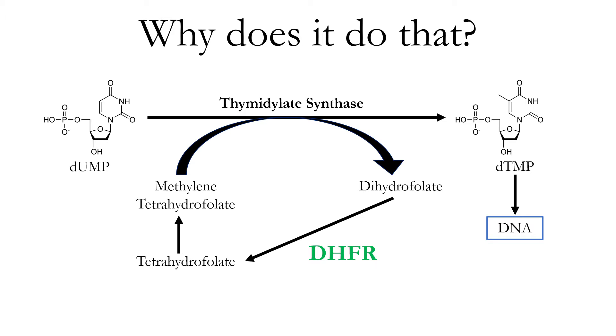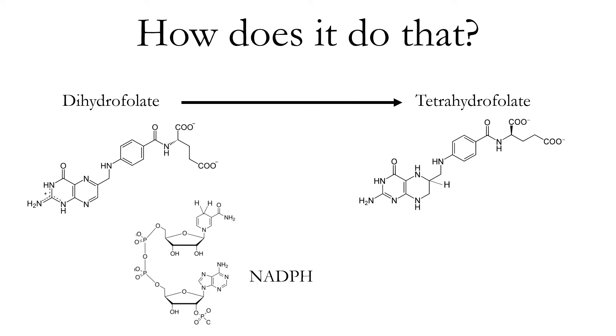DHFR couples this reduction reaction with an oxidation, the conversion of NADPH to NADP+. So, how does DHFR catalyze this reaction? Let's start with the basics. In this reaction, a double bond between a nitrogen and carbon atom in the dihydrofolate is reduced by a proton and NADPH. The reduction across this double bond results in the addition of two protons on either side of the bond. You may have noticed that NADPH only donates one hydrogen to dihydrofolate, yet there are two additional protons in tetrahydrofolate. The second proton is donated by the aqueous environment surrounding DHFR.